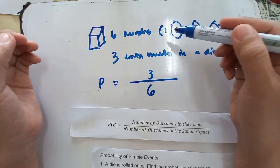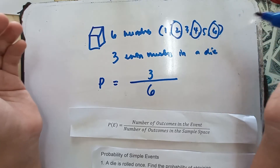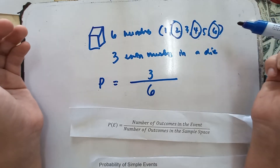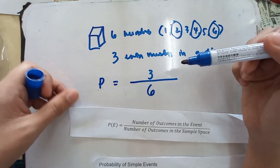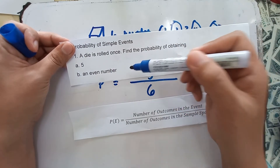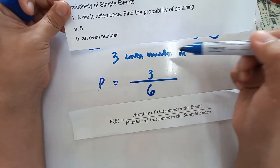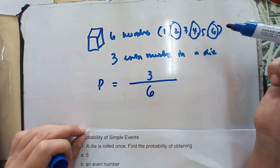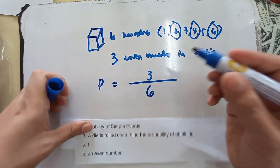When you throw a die, one, two, three, four, five, and six could possibly appear. These numbers are all possible when you roll a die. And when obtaining an even number, there are three even numbers in a die: two, four, and six. So, your probability is three over six.